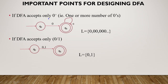If the DFA accepts only zero plus — zero plus is positive closure. Positive closure means one or more number of zeros. In the case of epsilon, it is not in the language. The minimum string is one zero. One zero, two zeros, three zeros — but how many combinations there are is not fixed. The minimum string is one zero.